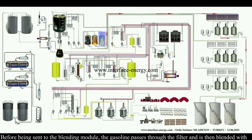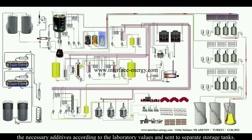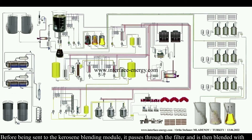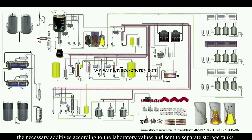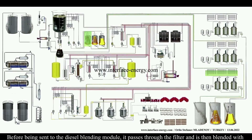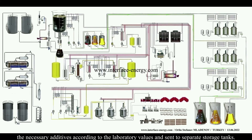Before being sent to the blending module, gasoline passes through a filter and is then blended with the necessary additives according to laboratory values, and sent to separate storage tanks. Similarly, diesel passes through a filter before being blended with additives according to laboratory values and sent to separate storage tanks.